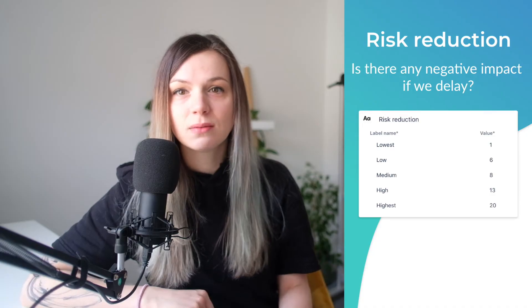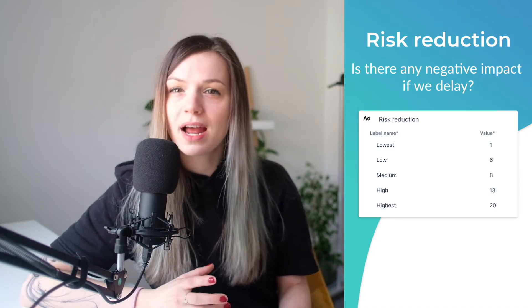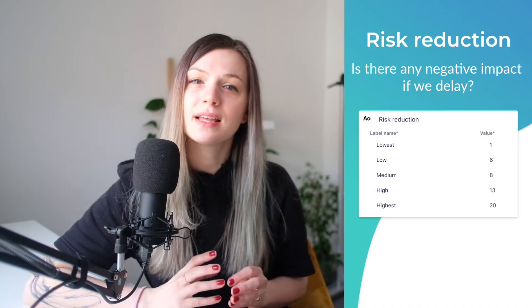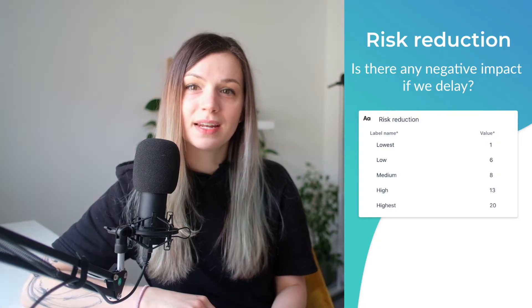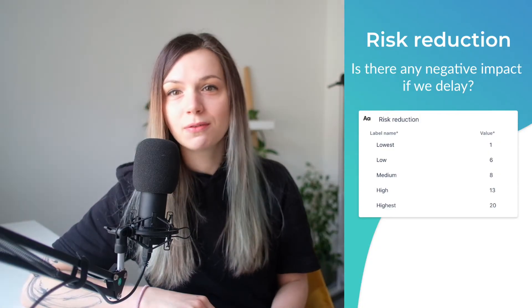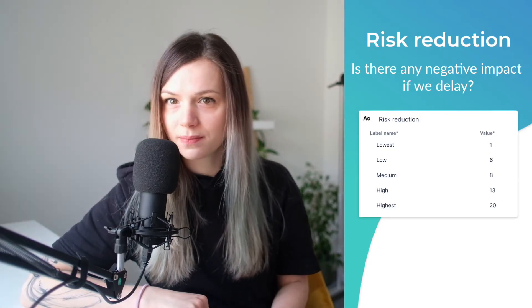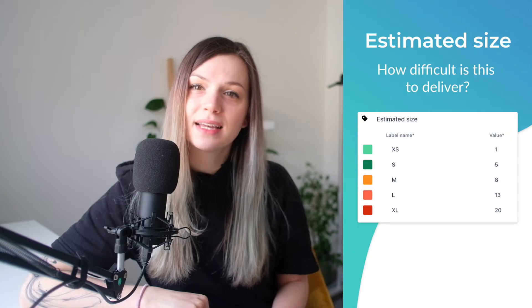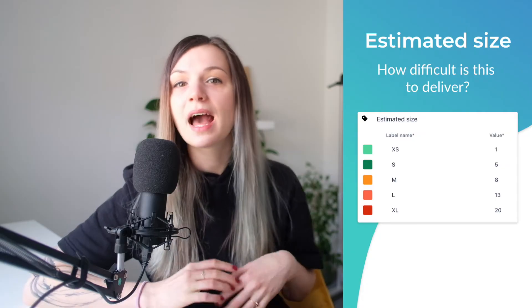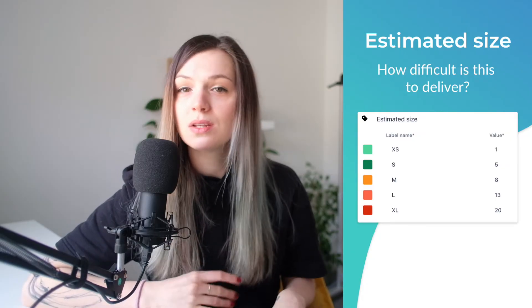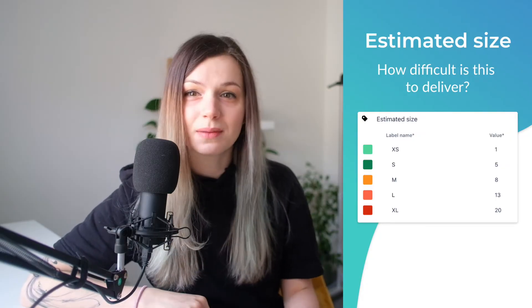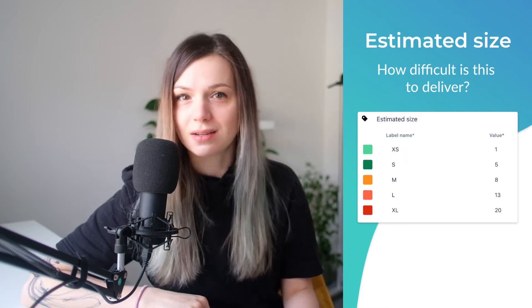The third metric is risk reduction. With risk reduction, we are assessing if there is any negative impact if we delay this task, and assign risk level from lowest to highest. The last metric is estimated size. Here we are asking how difficult it is to deliver the task. You can use t-shirt size estimation to make it easier for your team.